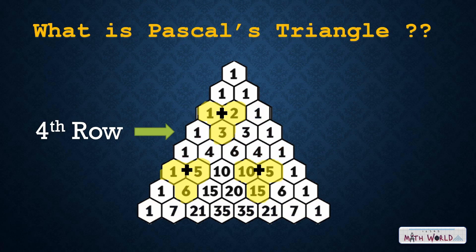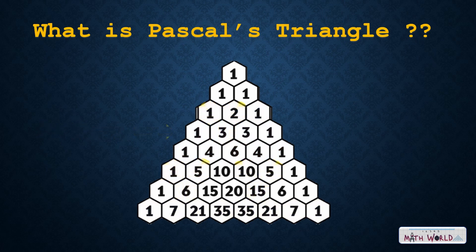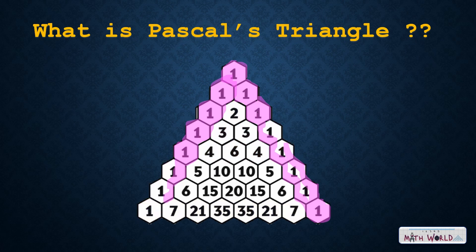Another interesting thing about Pascal's Triangle is that it contains many interesting patterns. For example, if you look at the diagonals of the triangle, you will see some interesting patterns. The diagonal from the top to the bottom is all 1s. The diagonal next to it is the counting numbers: 1, 2, 3, 4, etc.